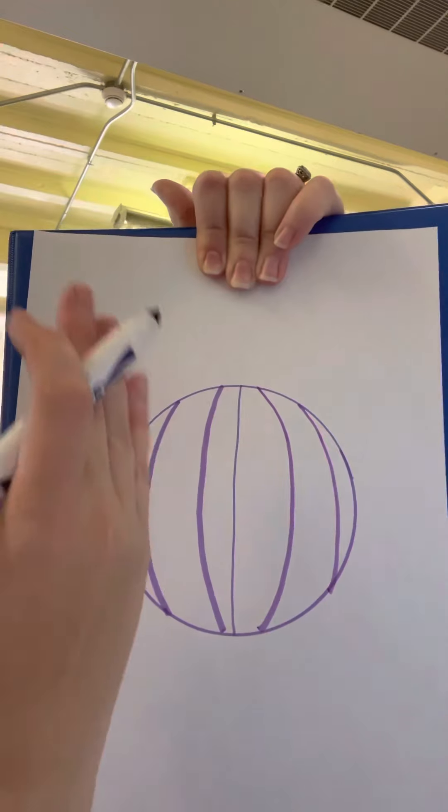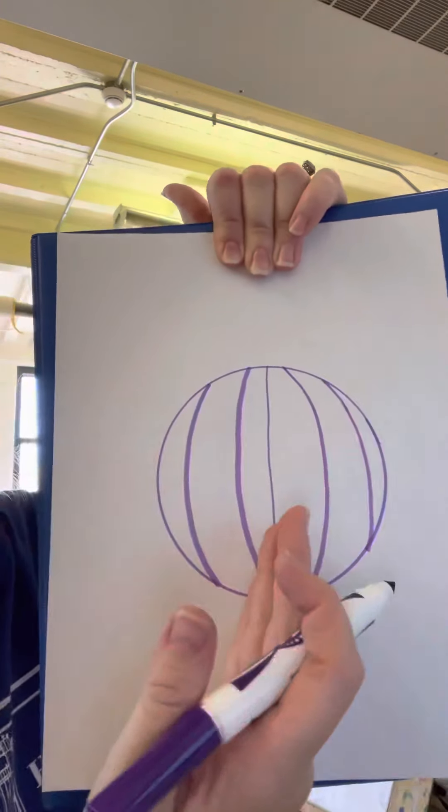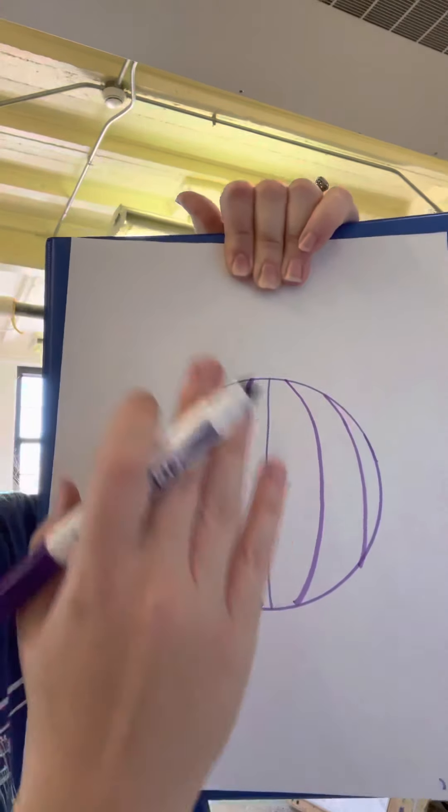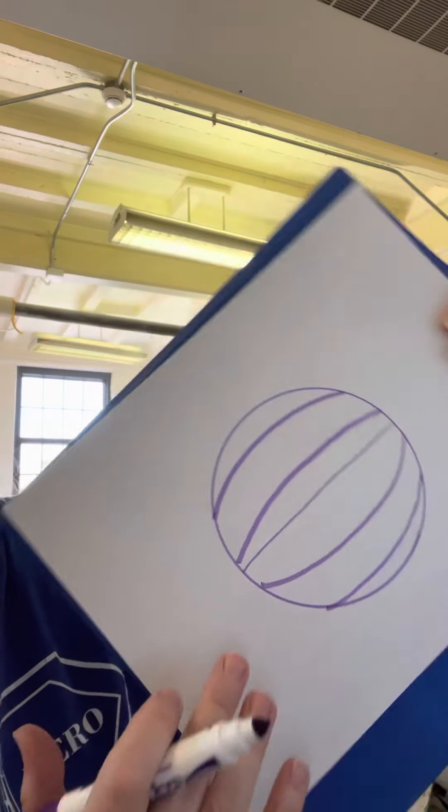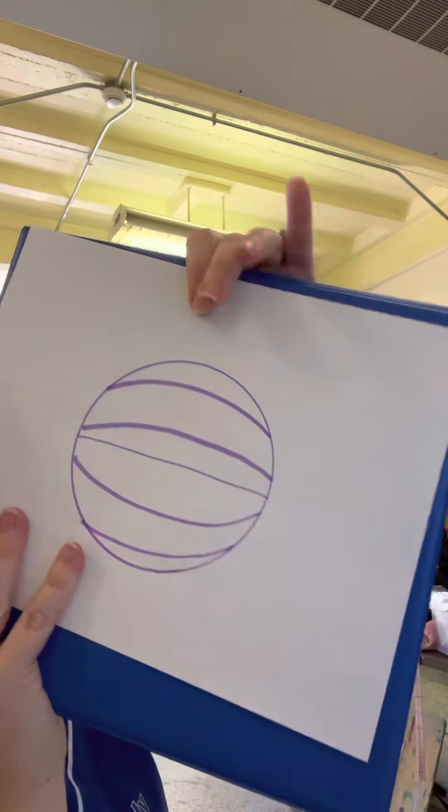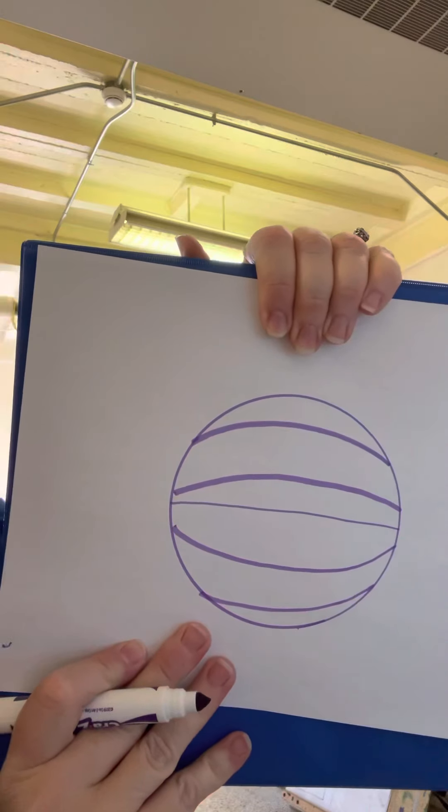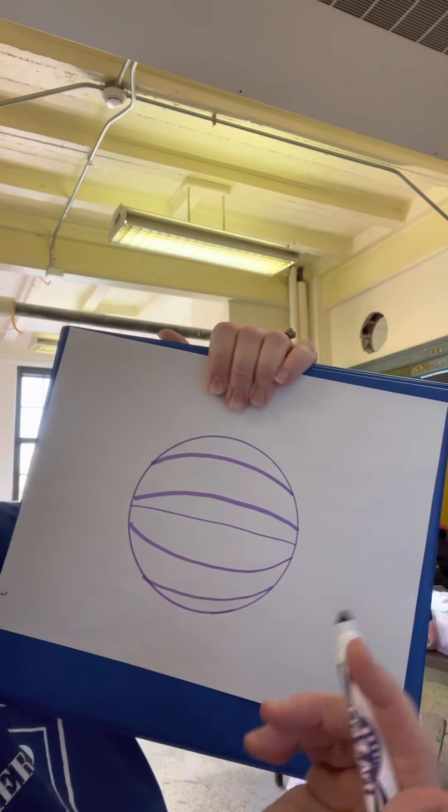Kind of looks like if you took an orange and you sliced it, it's gonna have curves to it. It's not just gonna be straight. Then, you're gonna flip your paper. Kind of looks like a basketball like this. And you're gonna do the same thing again.